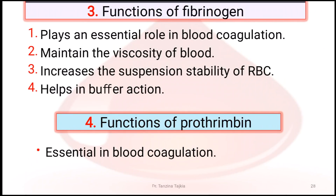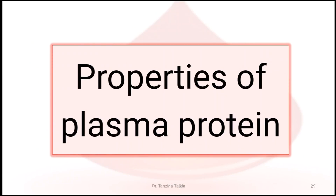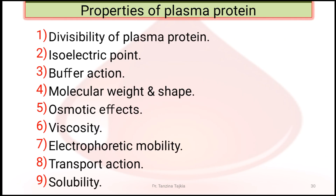Functions of fibrinogen: it plays an essential role in blood coagulation, maintains viscosity, increases suspension stability of red blood cells, and helps in buffer action. The function of prothrombin is in blood coagulation. There are nine properties of blood plasma: divisibility of plasma protein, isoelectric point, buffer action, molecular weight and shape, osmotic effect, viscosity, electrophoretic mobility, transport action, and solubility.